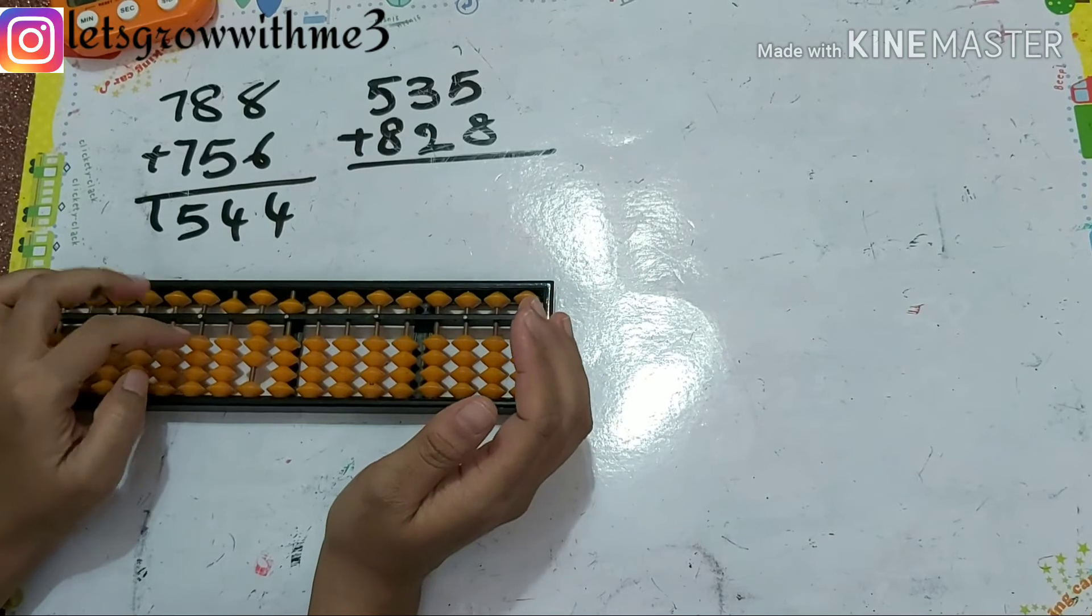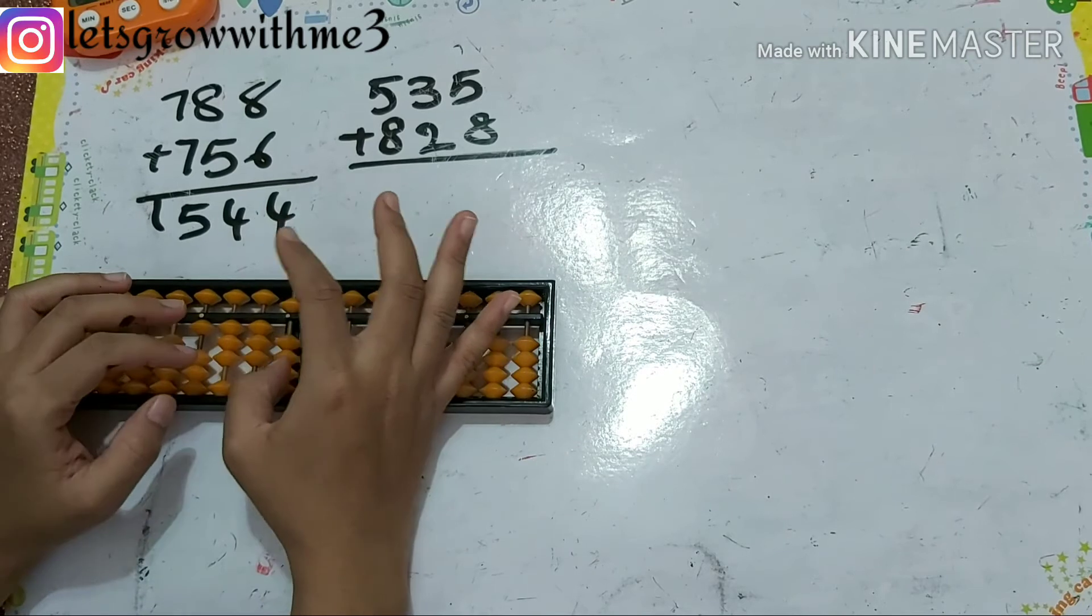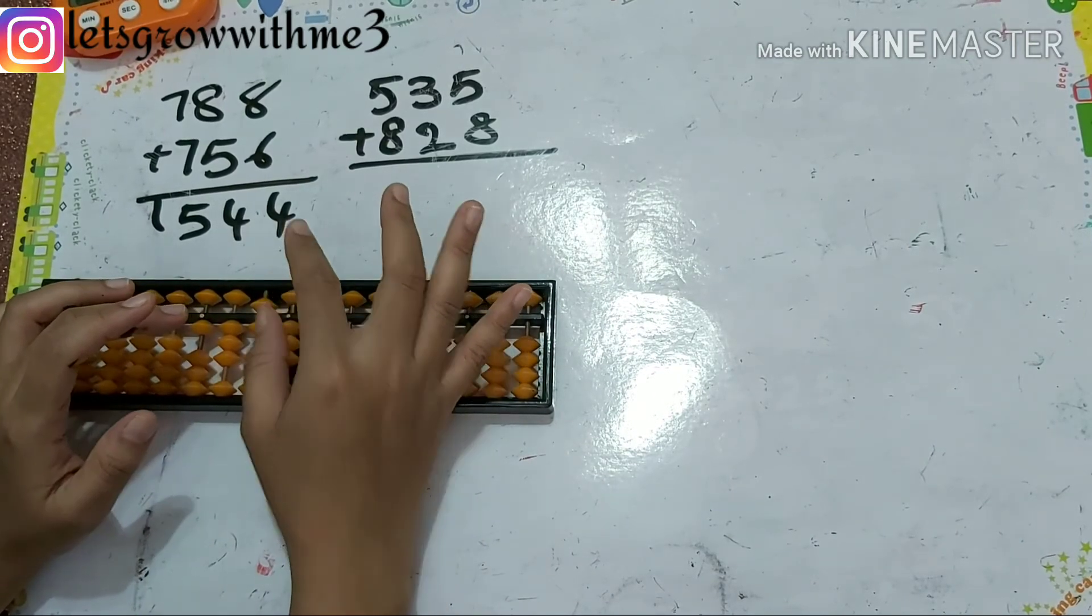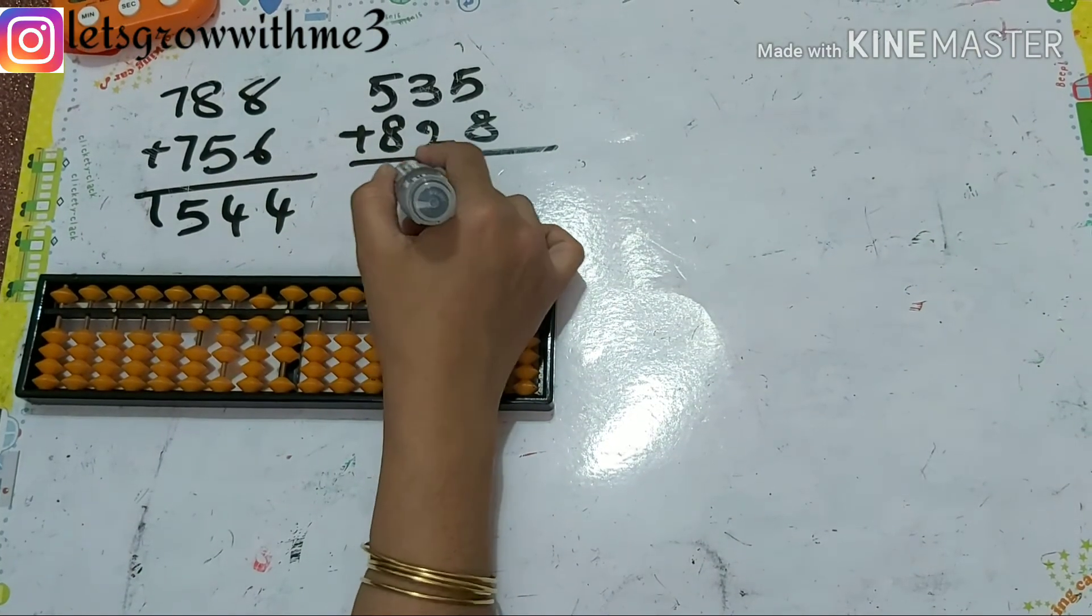Next one is 535 plus 828. So papa up, mama up, babies up. Plus 2, plus 5 minus 3. Next plus 8, papa up, mama up, babies up. So the answer is 1363.